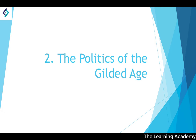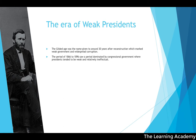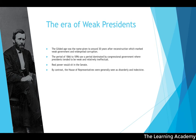The politics of the Gilded Age were seen as the era of weak presidents. The Gilded Age — roughly 30 years after Reconstruction — marked a period of weak government and significant political corruption. The period from 1866 to 1896 was dominated by Congressional government, where presidents tended to be weak and ineffectual. Within Congress, the Senate was the most powerful of the two houses, while the House of Representatives was generally seen as disorderly and indecisive.